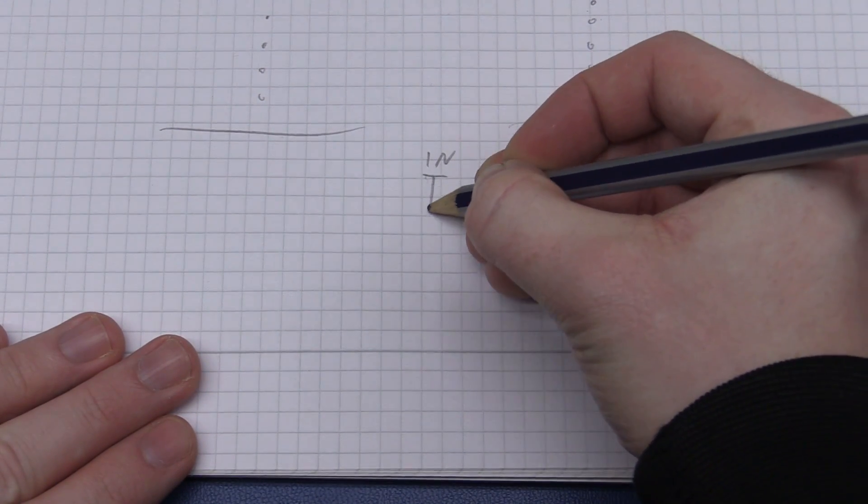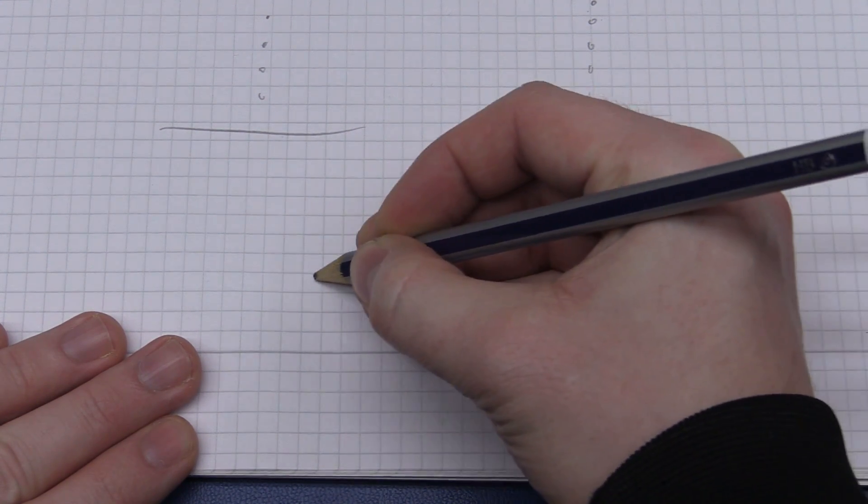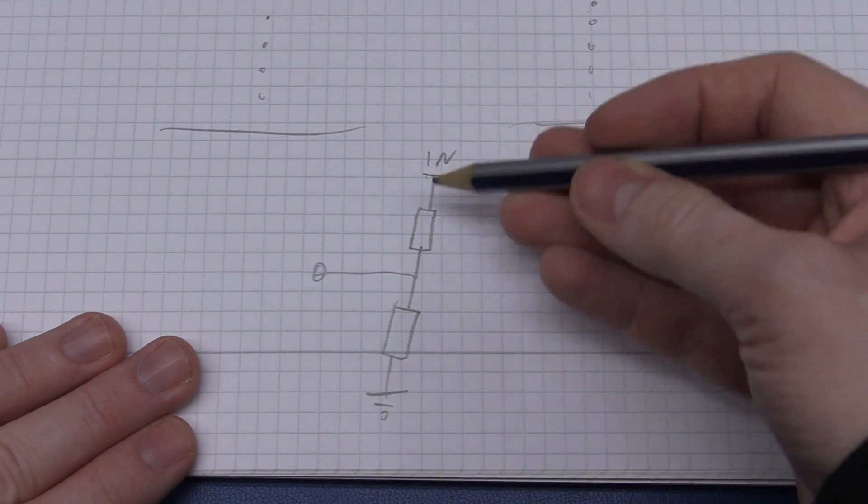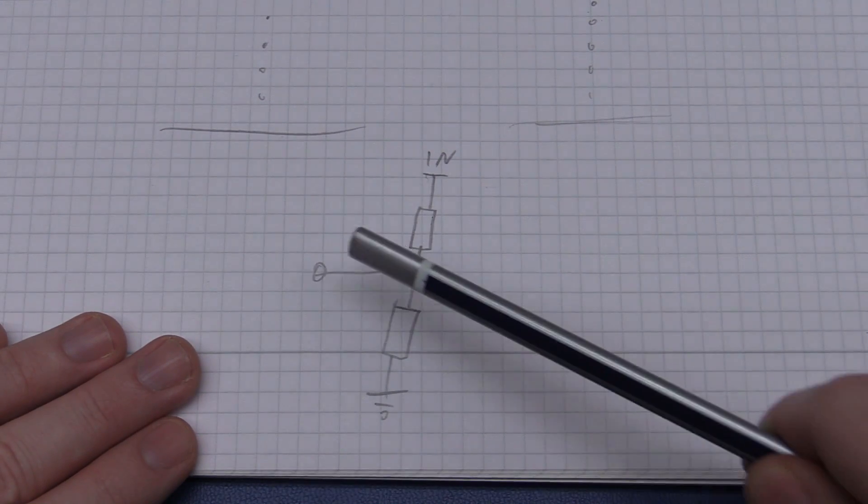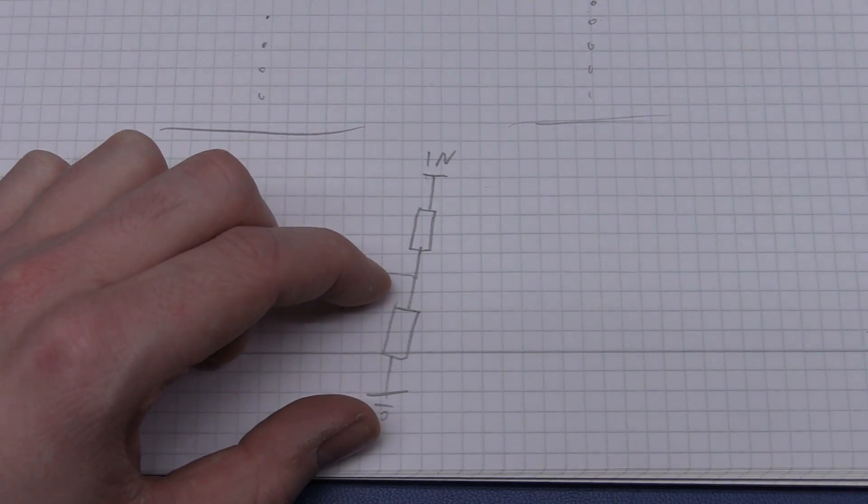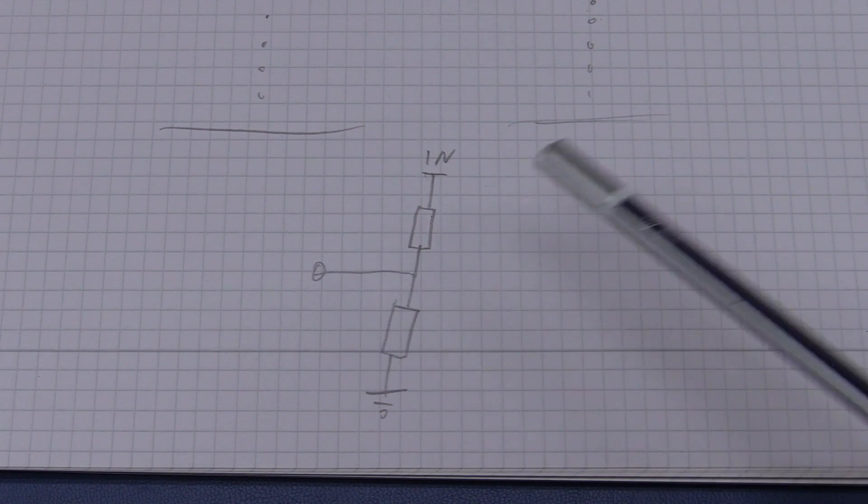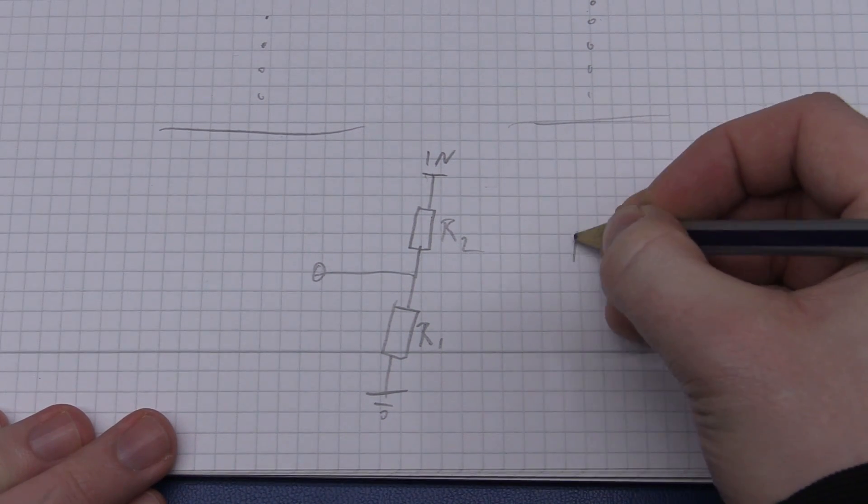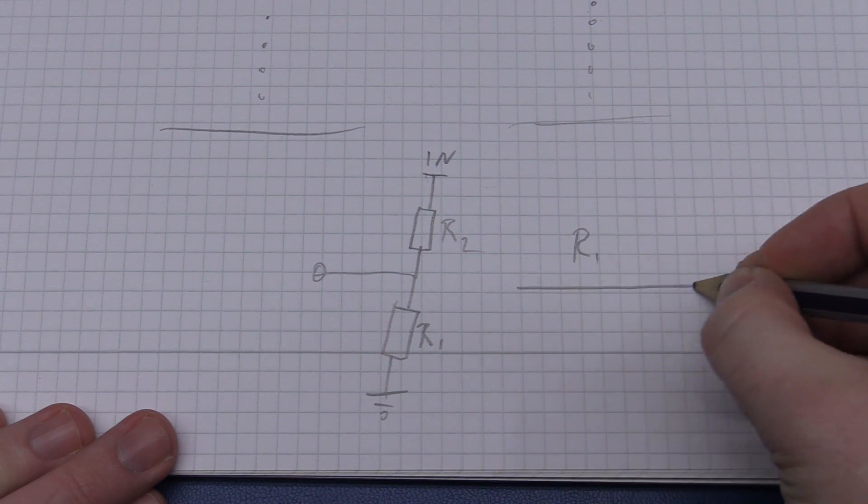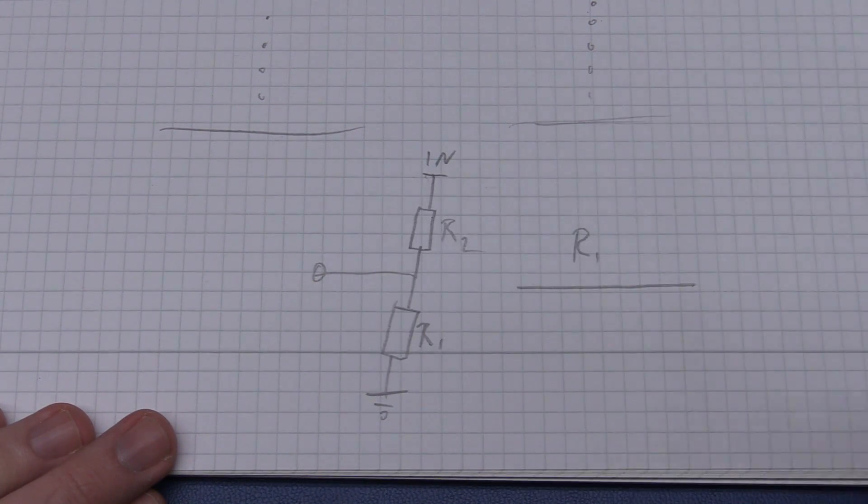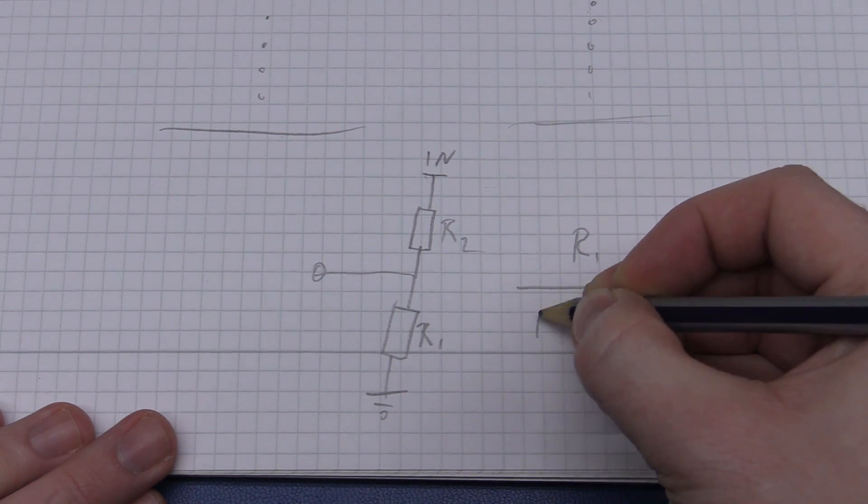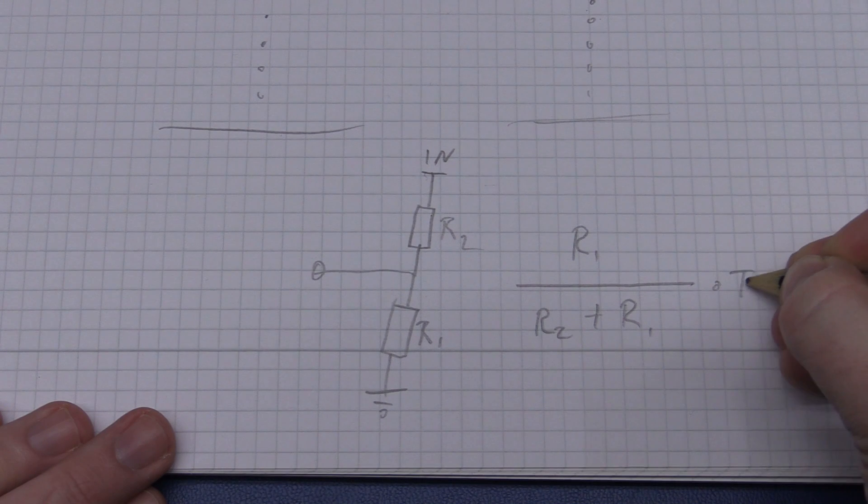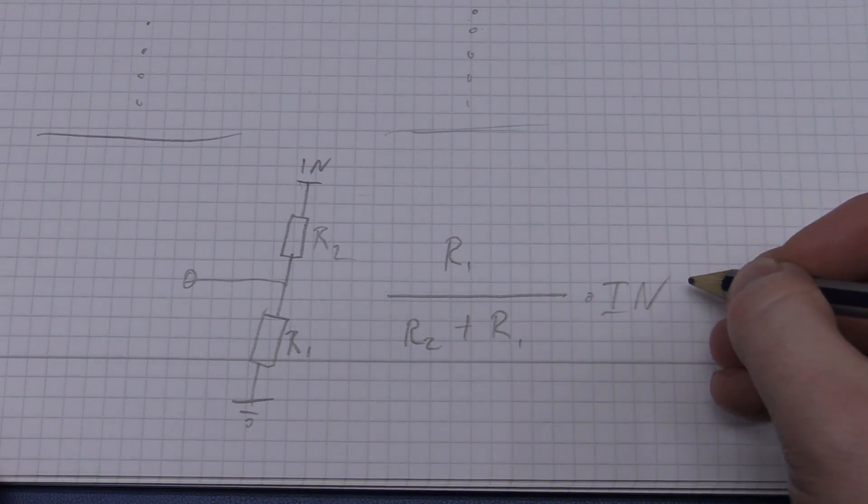If we have the input here, we go through one resistor, then we can take the output here. This is your typical voltage divider, and the formula for calculating the output voltage is that you take the resistor that you want to know the voltage drop of, and you put that in the numerator of a fraction. So we do R1, and we divide that by the total resistance, which will be R2 plus R1, and then you multiply by the input voltage. That should equal your output.